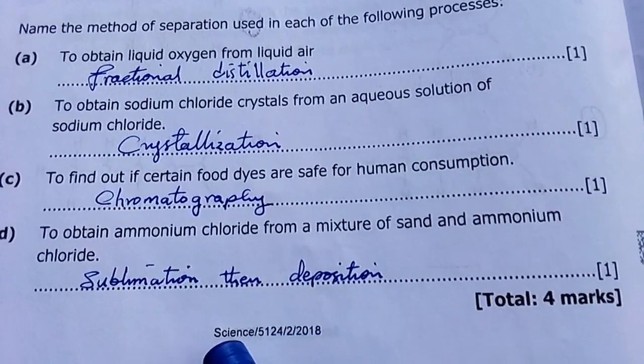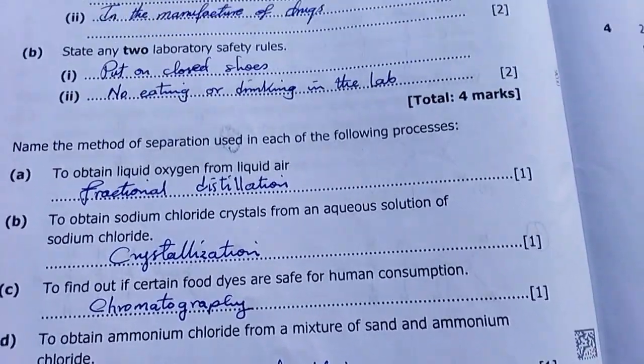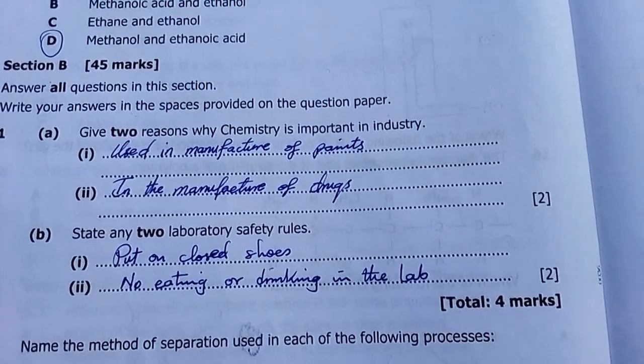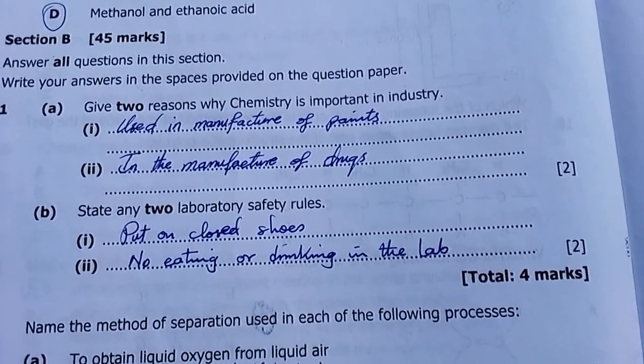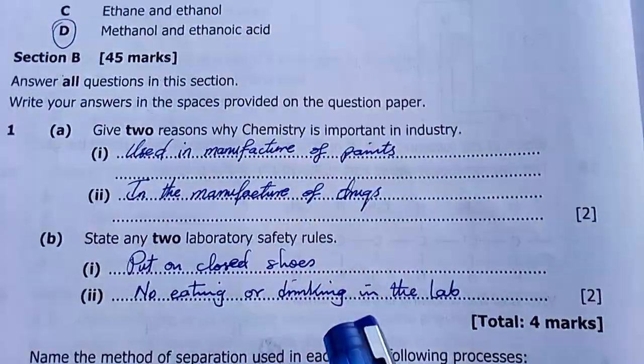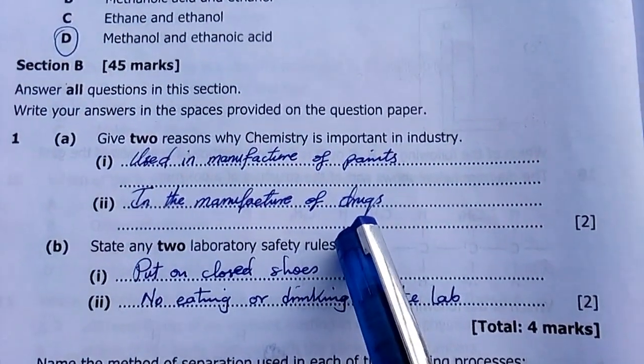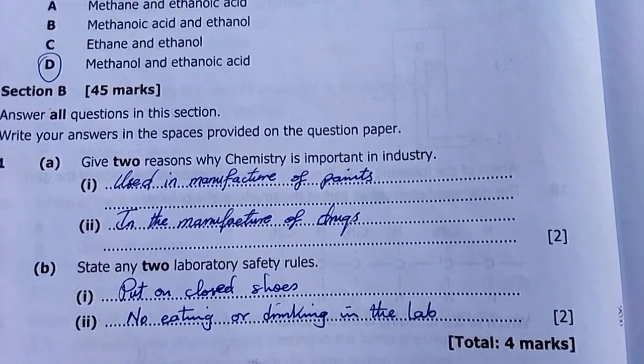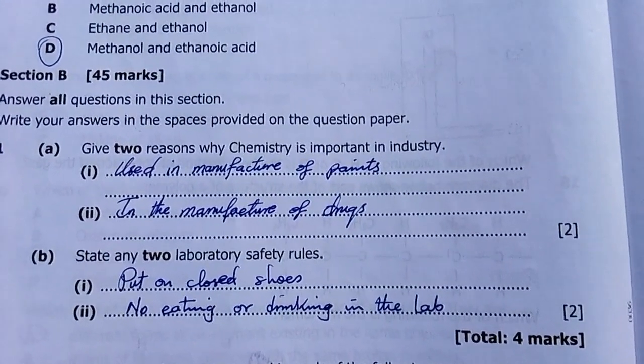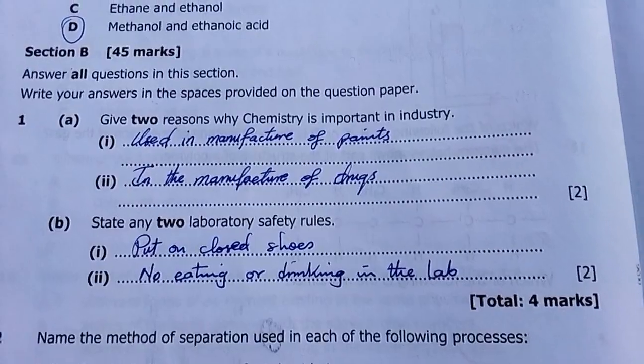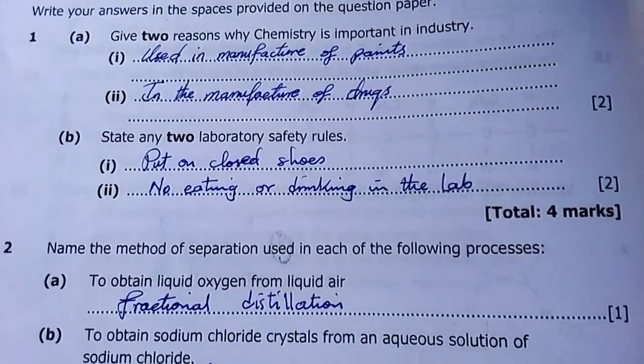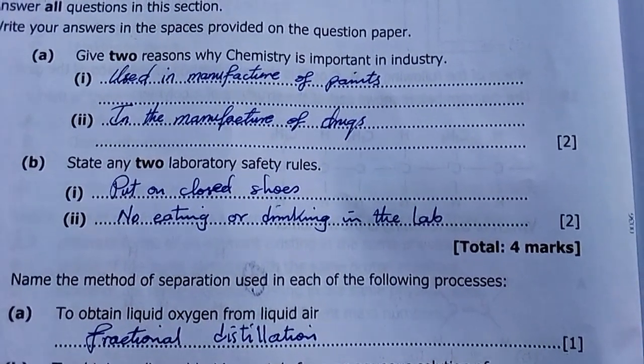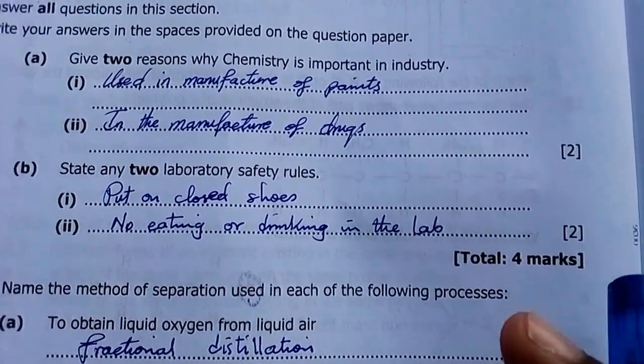Question 1 of Section B, Science 2 for 2018. Give two reasons why chemistry is important to industry. There are many reasons, but among them: manufacture of paints, manufacture of drugs, analysis of chemicals, manufacture of insecticides, manufacture of polymers. Chemistry is widely used in industry.